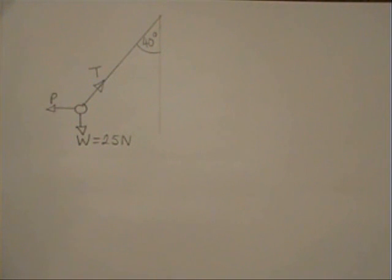In this example the weight is 25 newtons and the angle theta is 40 degrees. We need to find the tension T and the sideways pull P.